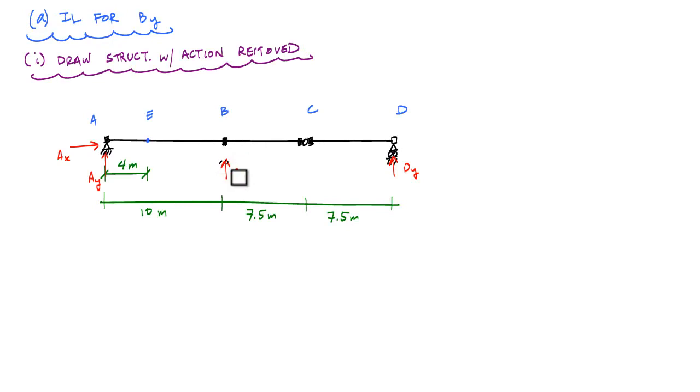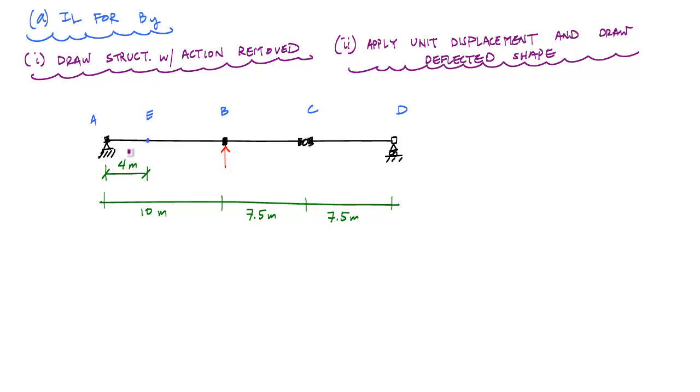The way I drew B-Y here is going to tell me in which direction I need to apply the unit displacement. So the next thing I want to do is apply the unit displacement and draw the deflected shape. Because I have a statically determinate beam, and I removed a reaction so it's unstable now, all my beam segments are going to go through a series of rigid body motions or rigid body displacements.